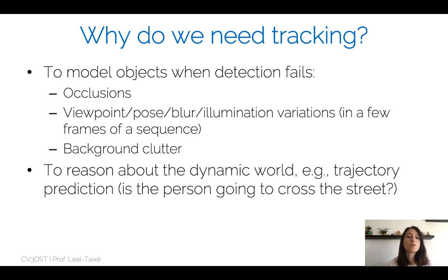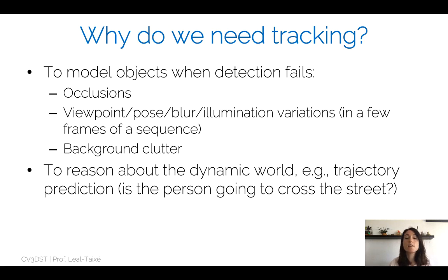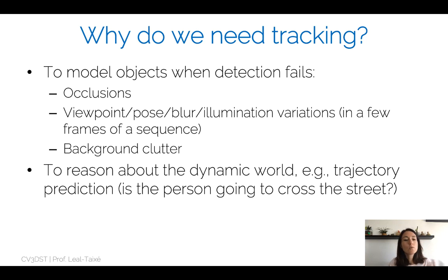When an object goes through occlusions, it would be nice to have an idea of where the object might be. The same applies to viewpoint changes, pose changes, motion blur, illumination changes — all kinds of artifacts that might make our detector fail, causing us to no longer detect the object in that frame. We can use tracking to estimate where the object might be given the previous trajectory, and also when there is background clutter.